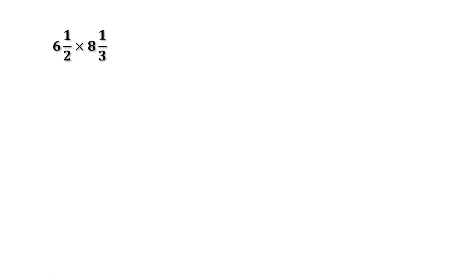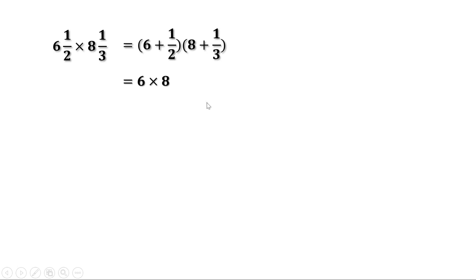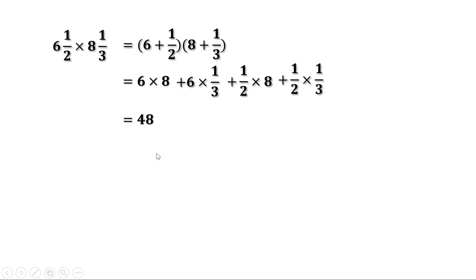Next problem: 6 and a half into 8 and one third. 6 and a half can be written as 6 plus 1 by 2 and 8 one third as 8 plus 1 by 3. This equals 6 into 8 plus 6 into 1 by 3 plus 1 by 2 into 8 plus 1 by 2 into 1 by 3. 6 into 8 is 48. 6 into 1 by 3 is 2. Half of 8 is 4. 1 by 2 into 1 by 3 is 1 by 6. So 48 plus 2 plus 4 plus 1 by 6 equals 54 and 1 by 6.